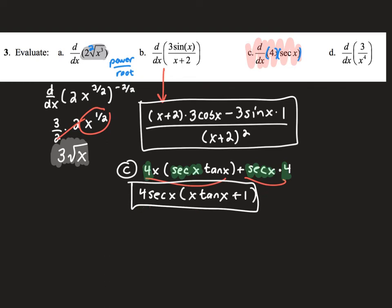For part D, I first rewrite as 3x to the negative 4th. Now it's just a power rule: bring down the power to get negative 12x, then subtract 1 from negative 4 to get negative 5. To get rid of the negative exponent, I rewrite it as negative 12 over x to the 5th power.